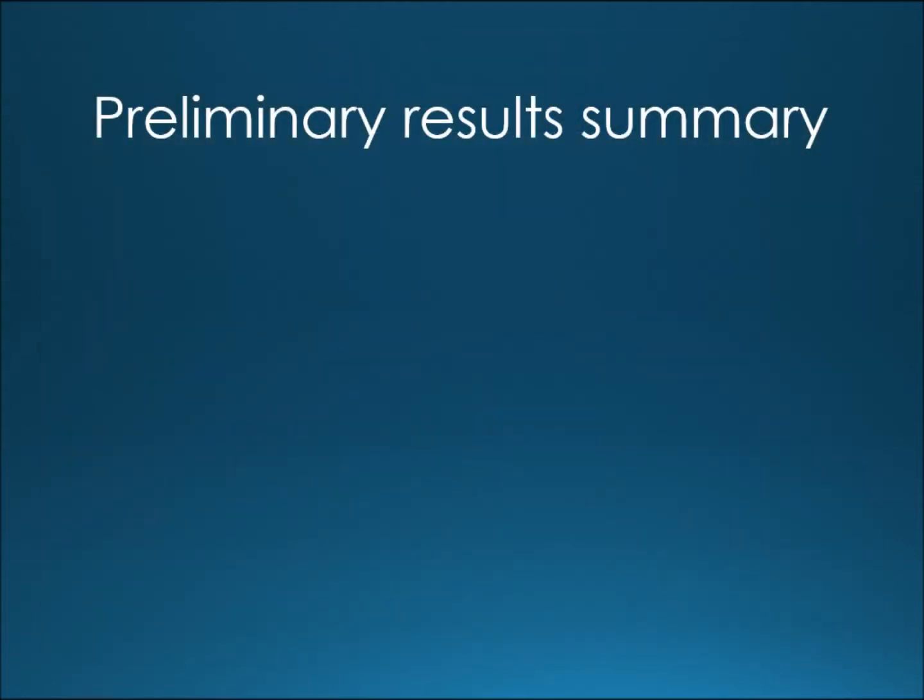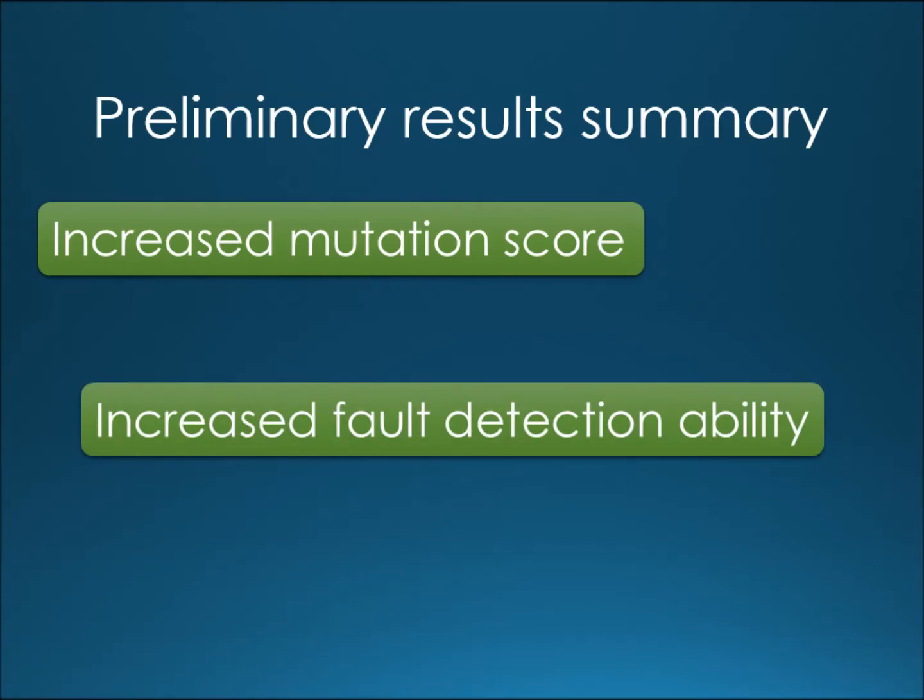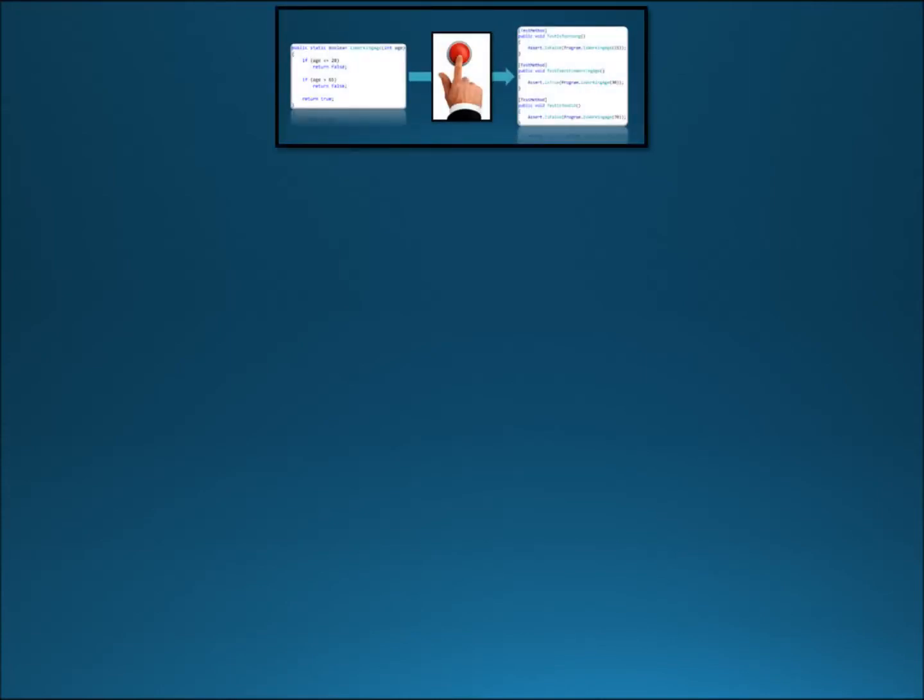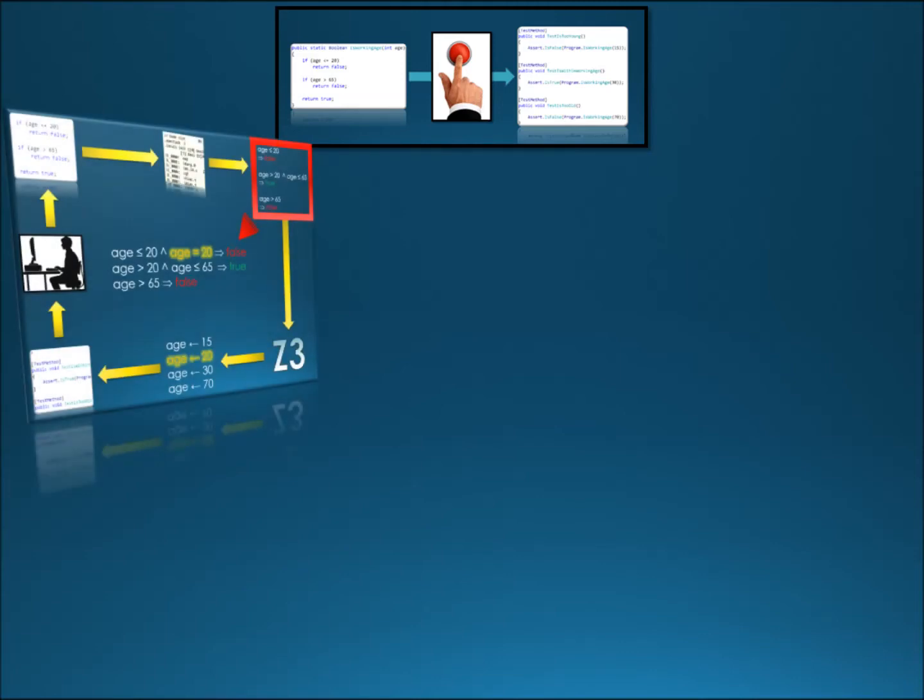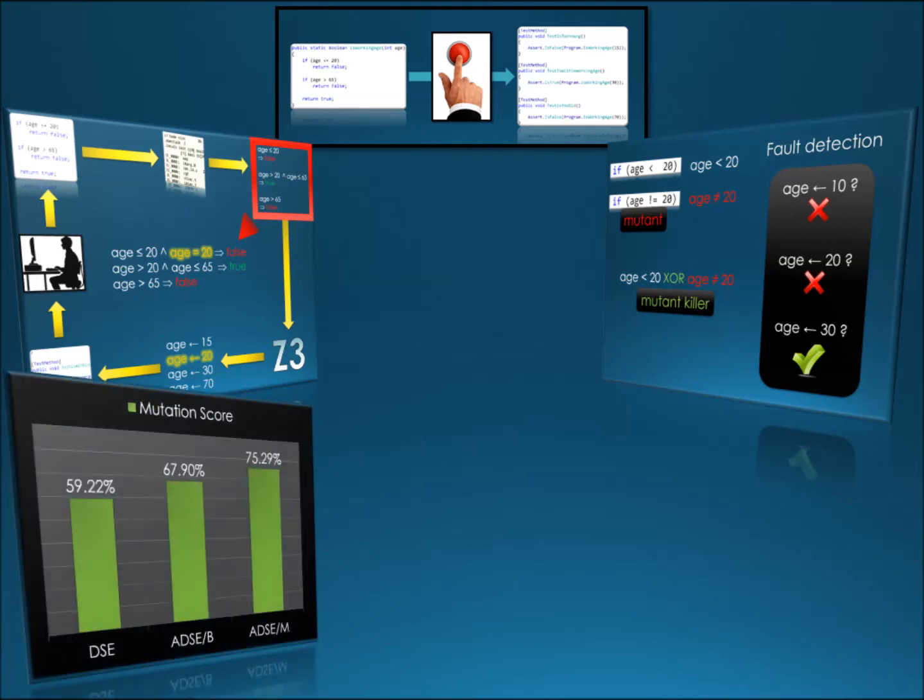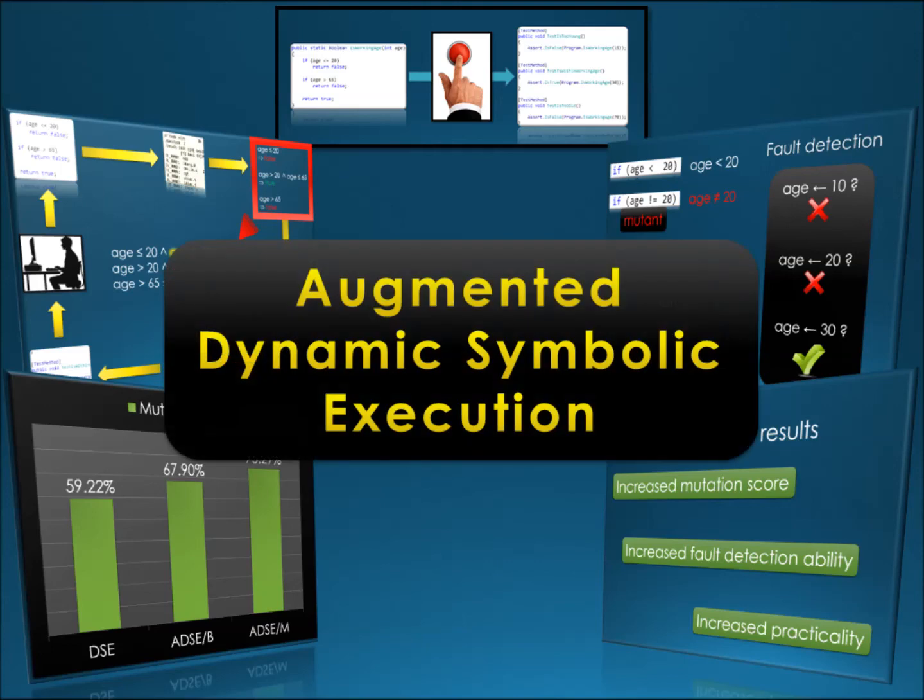Let's summarize the preliminary results about ADSE we have. We have shown that ADSE can increase mutation score, which means it can increase the fault detection ability. And also we managed to generate tests covering boundary cases, which meet developers' expectations. To wrap up the presentation, the overarching goal is automatic test generation. We work towards this goal by augmenting dynamic symbolic execution, that is, by modifying constraints just before they are fed to the constraint solver. We implement two instantiations of ADSE, boundary values and mutation testing. We show both of these instances increased mutation score, thus our preliminary research shows a promise in the ADSE concept. That concludes this presentation. Thank you for your attention.